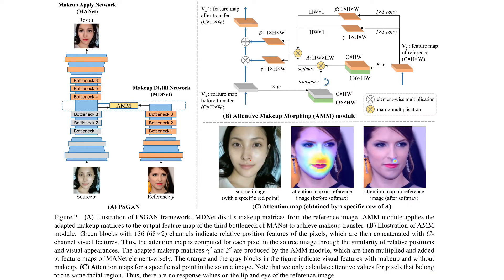The framework of PSGAN can be divided into three parts. The makeup distilled network extracts the makeup style from the reference image Y, and represents it as two makeup matrices, gamma and beta, which have the same height and width as the feature map. The Attentive Makeup Morphing Module morphs the two makeup matrices to two new matrices, gamma prime and beta prime, which are adaptive to the source image by considering the similarities between pixels.